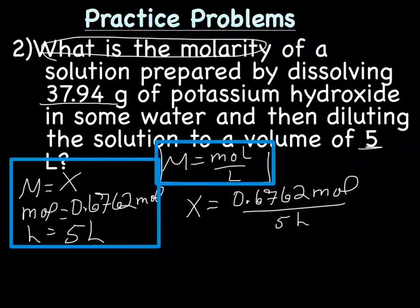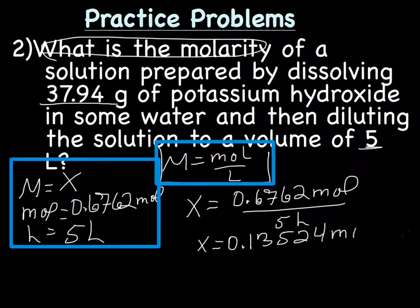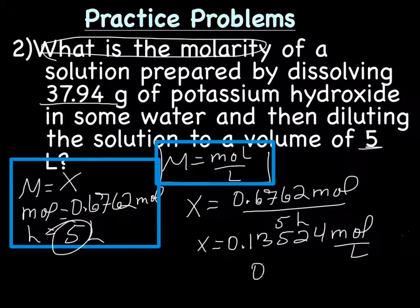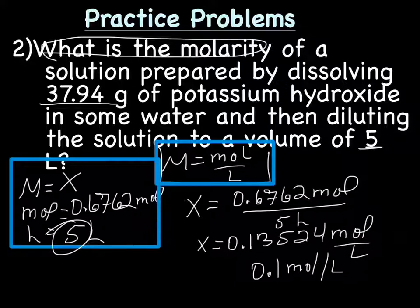This time, we don't have to cross-multiply, we're just going to divide. When we do that, I got 0.13524 mol over liters, one sig fig, so we're going to have 0.1 mol over liters, or we could also write that as 0.1 liters, either one.